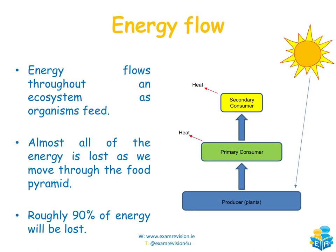Energy flows throughout the ecosystem as organisms feed. When the primary consumer eats the producer it gains some energy, and when the secondary consumer eats the primary consumer it gains some energy too — but the majority is lost as heat energy. Roughly 90% of all energy is lost as we move from the bottom to the top of the food chain. That is why the tertiary consumer is usually the top consumer — after that, very little energy remains.